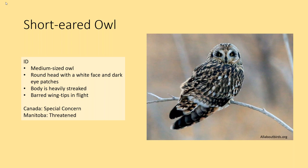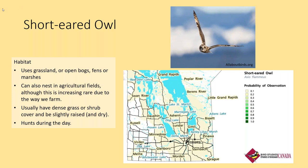The Short-eared Owl is a medium-sized owl with a round head, a white face, dark eye patches, and a heavily streaked body, with barred wing tips in flight. It is a species at risk both federally and provincially — recently re-evaluated as threatened by COSEWIC, so its federal classification may be updated soon. It uses grasslands but also wetter areas like open bogs, fens, or marshes, and can occasionally nest in agricultural fields. It likes dense grass or shrub cover for nesting, slightly raised and dry. Notably, the Short-eared Owl hunts during the day.